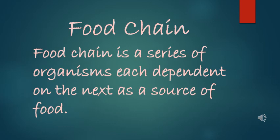So children, I hope you have understood what is a food chain. It is a sequence which shows how living things in an environment are related to each other according to their feeding habits. Or in short, we can say food chain is a series of organisms each dependent on the next as a source of food.